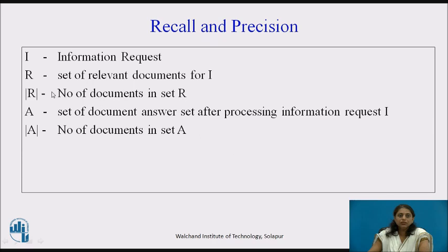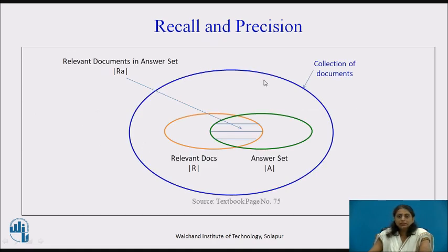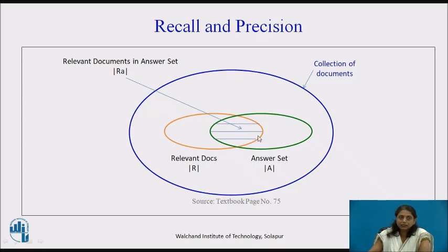Let us define the notation. I is an information request; R is the set of relevant documents for I; |R| is the number of documents in R; A is the set of documents in the answer set after processing request I; and |A| is the number of documents in A. For a given information request, R is the set of relevant documents, and the green color indicates the answer set. The intersection of the relevant documents and the answer set gives the relevant documents in the answer set.